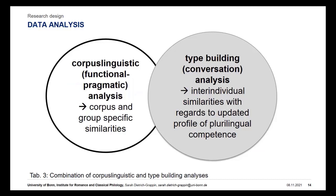A corpus-linguistic as well as type-building analysis ran over the L3 performance data. While the descriptive corpus-linguistic analysis has shown corpus and group-specific similarities with regards to the exploratory and comparison group, the type-building analysis, more interpretive in nature, rather focused on inter-individually updated profiles of plurilingual competence. Retrospection data has been a key in doing so.